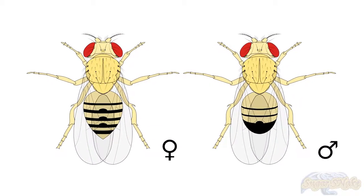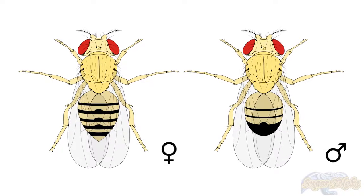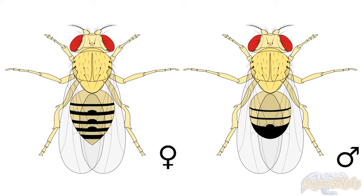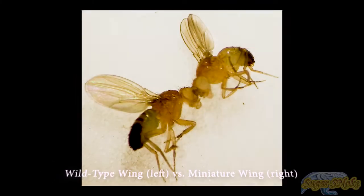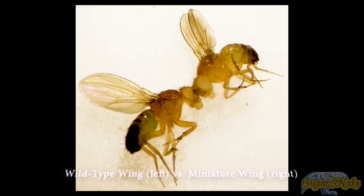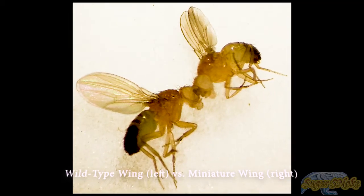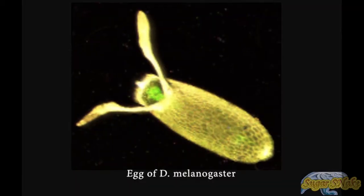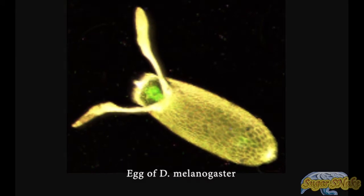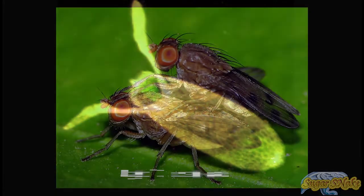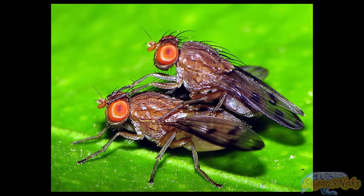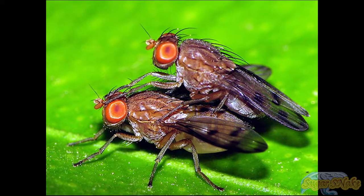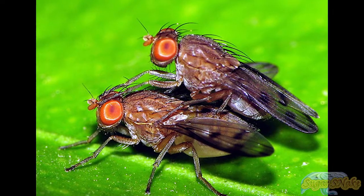Under optimal growth conditions at 25 degrees C, the D. melanogaster lifespan is about 50 days from egg to death. The developmental period for D. melanogaster varies with temperature, as with many ectothermic species. The shortest development time, egg to adult, is 7 days, achieved at 28 degrees C.